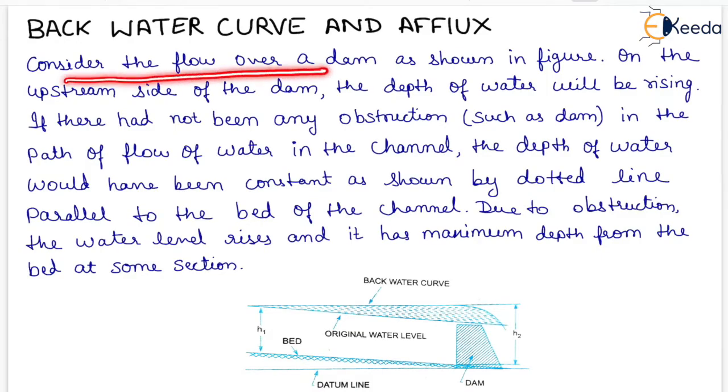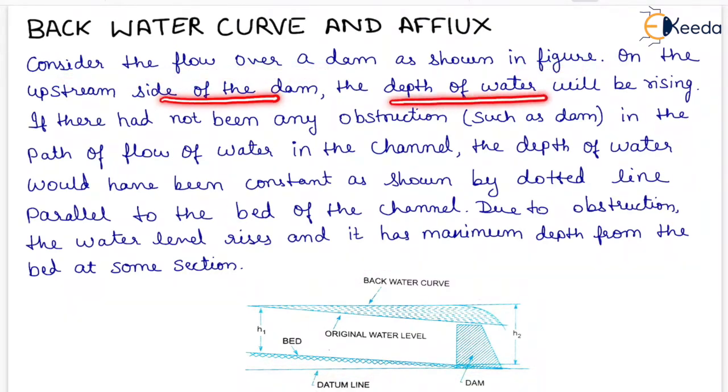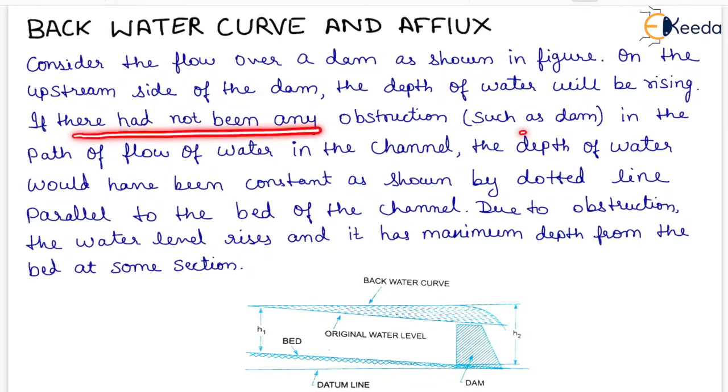Consider the flow over a dam as shown in figure. On the upstream side of the dam, the depth of water will be rising. If there had not been any obstruction such as dam in the path of flow of water in the channel,